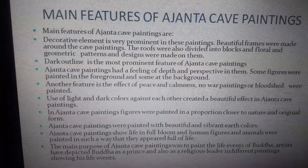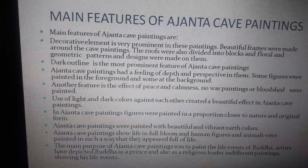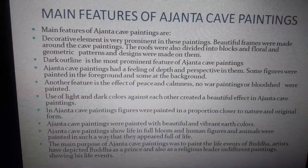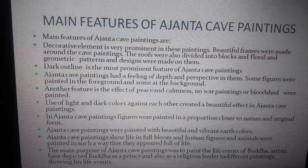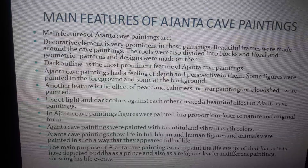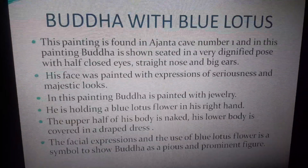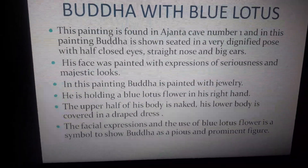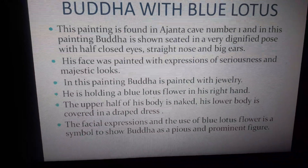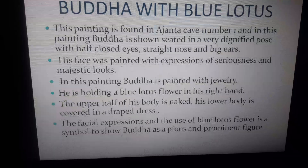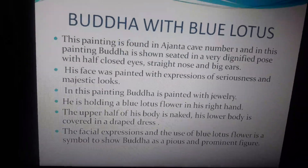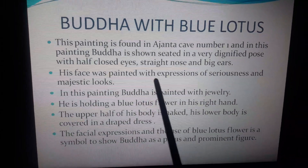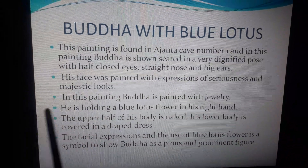Ajanta cave paintings show life in full bloom — human figures and animals were painted in such a way that they appeared full of life. The main purpose was to paint the life events of Buddha, and artists depicted him both as a prince and as a religious leader. In cave number one, Buddha is shown seated in a dignified pose with half-closed eyes, a straight nose, and big ears — features painted repeatedly to represent Buddha.